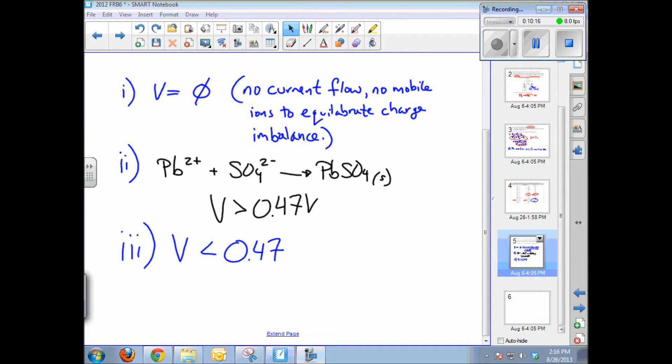So the answer to part three is that the voltage will be less than 0.47 if it runs overnight. Another way to say the same thing is that for any battery, the voltage approaches zero over time as the reaction approaches equilibrium. And equilibrium would be a voltage of zero across the voltmeter.